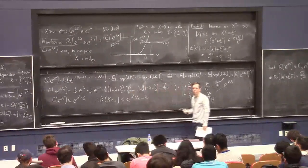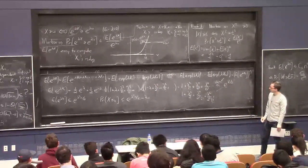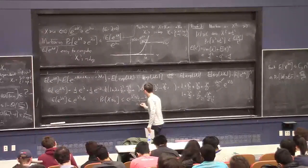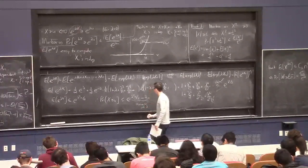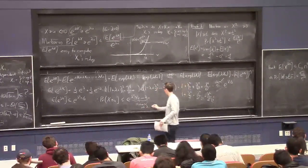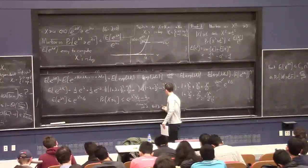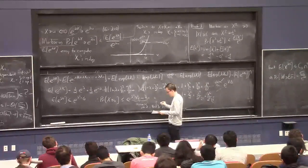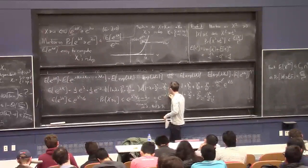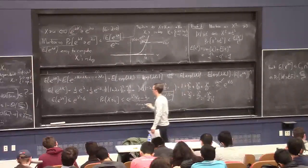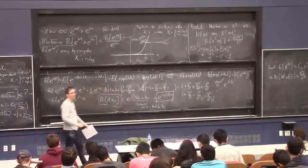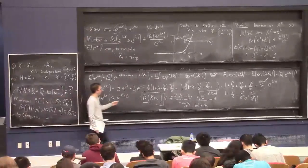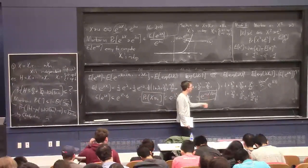This is a true fact for every positive real lambda, so we choose lambda to minimize the right-hand side. That's a small optimization exercise, and the best lambda is u over n. Plugging in lambda equals u over n, we get that this is e to the minus u squared over 2n. This is exponentially small once u is bigger than root n — but root n is the standard deviation, so that's to be expected.